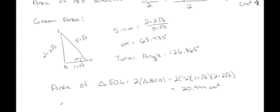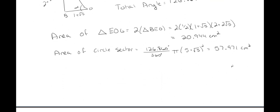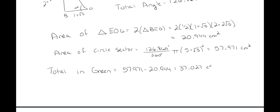The area of the circle sector uses our angle: (126.869/360) × π × (5 + √5)², giving approximately 57.971 cm². So the total green area is the circle sector minus the triangle area: 57.971 − 20.944 = 37.027 cm².